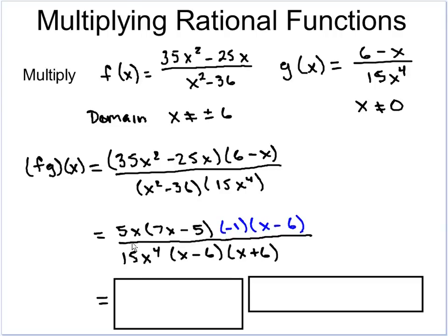Factoring the numerator 35x² minus 25x gives us 5x times (7x minus 5). Now notice that the term (6 minus x) has the x at the end — there's a little trick: if you factor out a negative sign, you can switch the two parts. By taking out the negative sign, the 6 becomes negative and moves to the end, and the x moves to the front, giving us negative (x minus 6). I placed the 15x⁴ in the front to make alignment easier, and x² minus 36 factors to (x minus 6)(x plus 6).